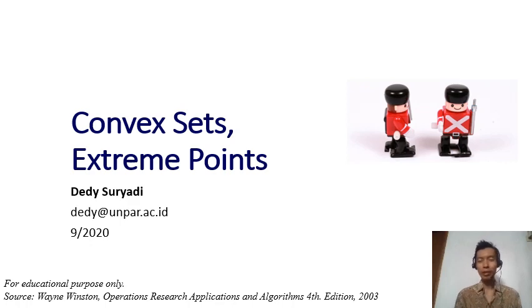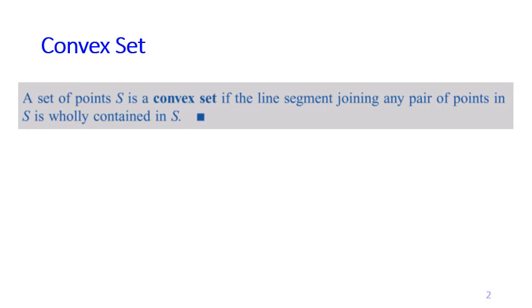Now let's talk about two terms: convex set and extreme points. If you have a set of points we call it S, that set is a convex set if you draw any line using two points in that set and the line is still contained in the set.